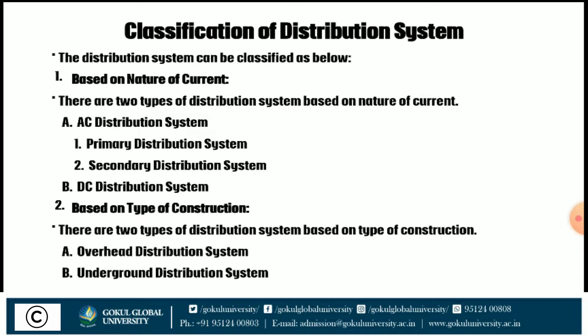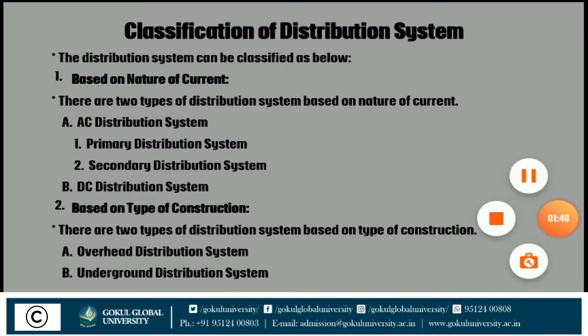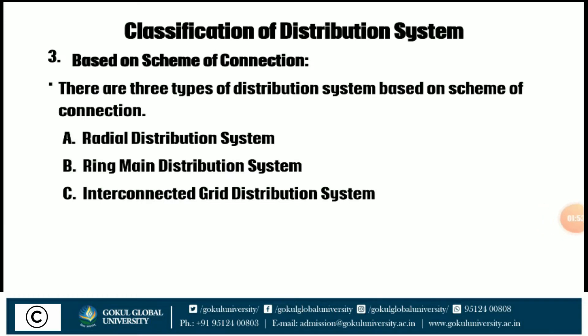Second, based on type of construction, there are two types: overhead distribution system and underground distribution system. Third, based on the scheme of connection, there are three types: radial distribution system, ring main distribution system, and interconnected grid distribution system. Now we discuss about each distribution system in detail.